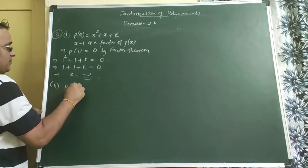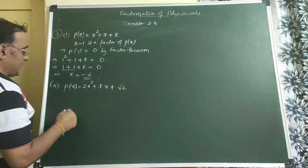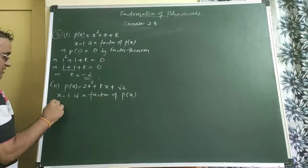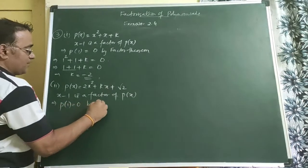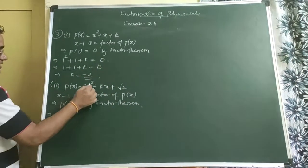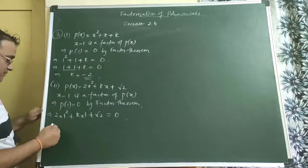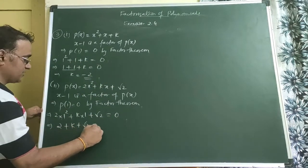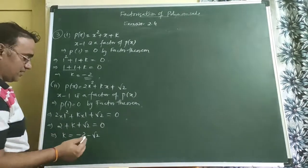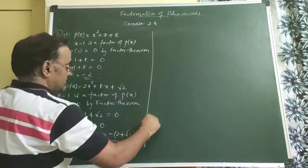Second bit: P(x) = 2x² + kx + √2. Since (x − 1) is a factor, P(1) = 0. Substituting x = 1: 2(1)² + k(1) + √2 = 0, giving 2 + k + √2 = 0, so k = −2 − √2.